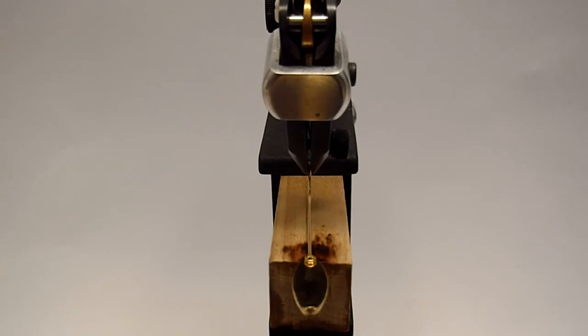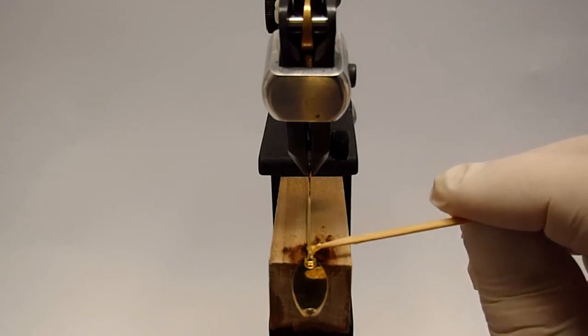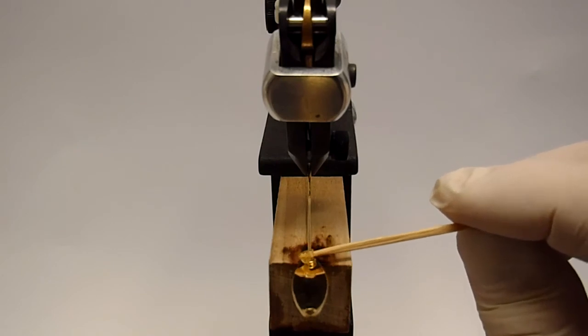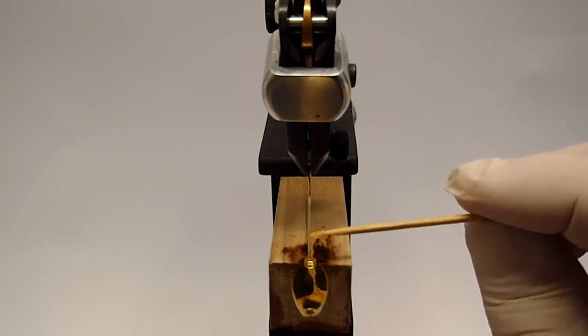I'm going to take a toothpick and a little bit of paste rosin flux. You come in here and a little dab will do you. Just a little tiny bit. This is what's going to help the solder flow whether using a lead-based solder or not.